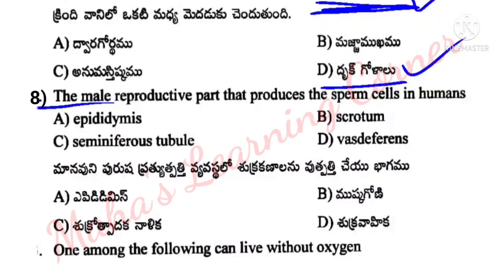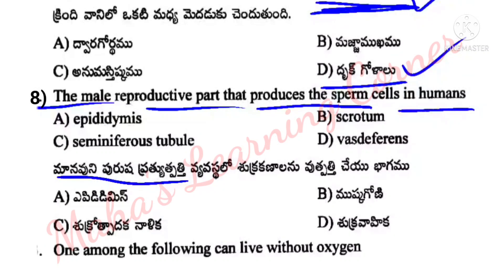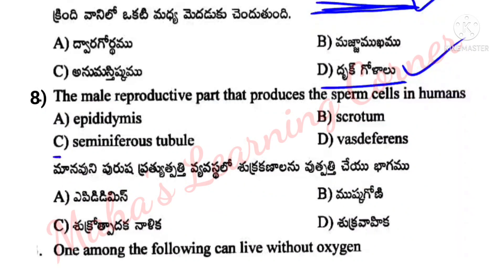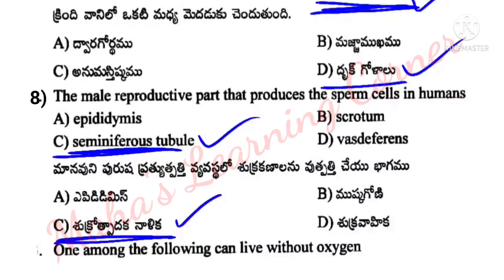Next question: The male reproductive part that produces sperm cells in humans. Options: A. Epididymis, B. Scrotum, C. Seminiferous tubules, D. Vas deferens. Correct answer: Option C is the correct answer — Seminiferous tubules produce sperm cells.